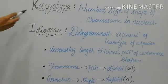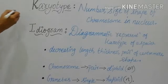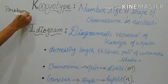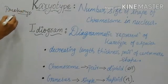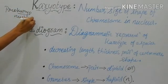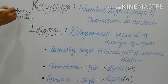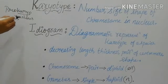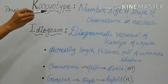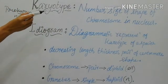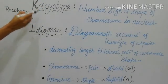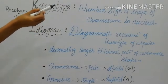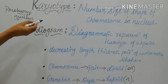Next is the karyotype. You may have come across the word 'karyo' before — in prokaryote, eukaryote, karyokinesis — this word means nucleus. The chromosomes are present inside the nucleus of an organism. The number, size, and shape of the chromosomes inside the nucleus of an organism is known as the karyotype.